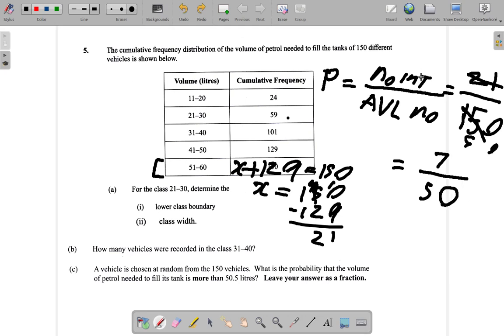Well, it doesn't seem as if you can cancel down any further. So, the answer here will be 7 over 50. It says, leave your answer as a fraction. So, I'll just leave it as 7 over 50.